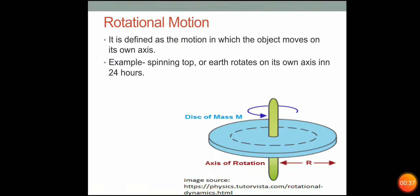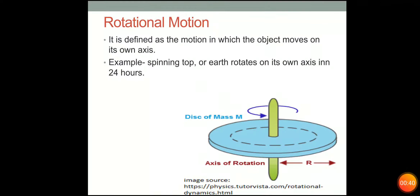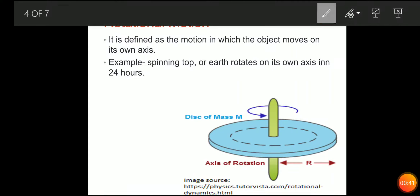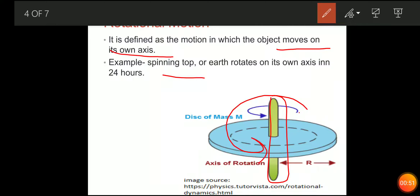Rotational motion is the motion in which the object moves on its own axis. For example, a spinning top — what happens in a spinning top is that it moves on its own axis. This is known as rotational motion.